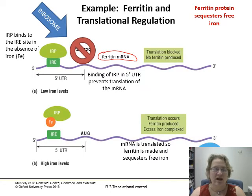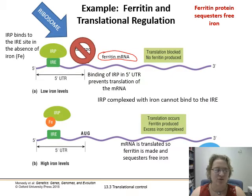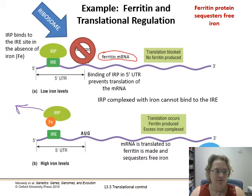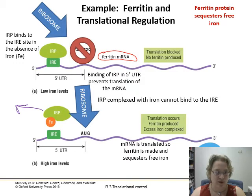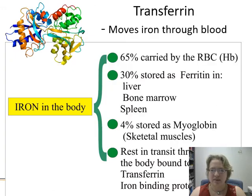However, when iron is present in the cell, the iron response protein binds iron and can no longer bond to the IRE — it lifts off. Now the ribosome has access to the start codon because we need to make more ferritin. That loose iron is going to be a problem, so the mRNA is translated, ferritin is made, and it can sequester that free iron that was causing damage.